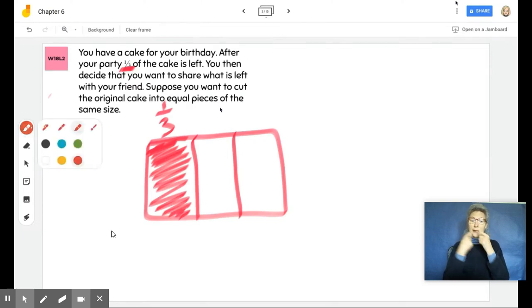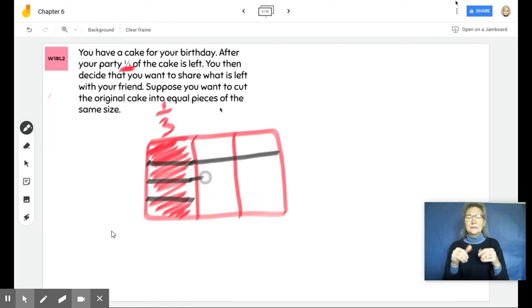I would need to then partition this into four. Let's see if I could do four equal pieces. But it says that we need to cut the original cake into equal pieces of the same size, so I'm just going to draw my line and continue it on over.